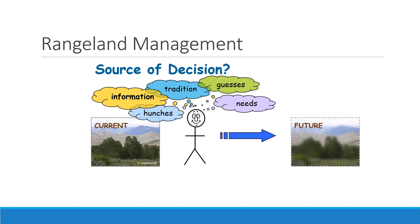You might have a hunch or a tradition. You might know someone down the road that told you this might work, so there might be traditional or community knowledge. Sometimes you just have to make a good guess. Other times you make decisions because of economics or community goals. Range management is known as both a science and an art. Science is the information; the art is the tradition, hunches, and guesses, and how you mix it all together.